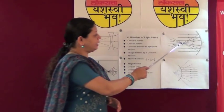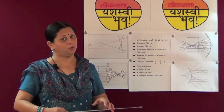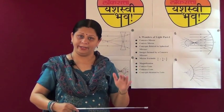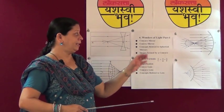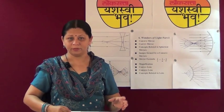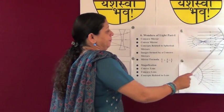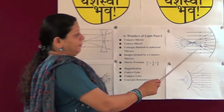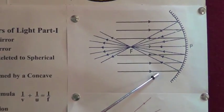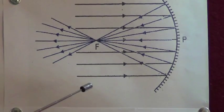Here F is written — this is the principal focus. The principal focus of a concave mirror is defined as the point where reflected rays meet together. When incident rays parallel to the principal axis fall on a concave mirror, they get reflected and meet in one point — that point is called the principal focus of the concave mirror.